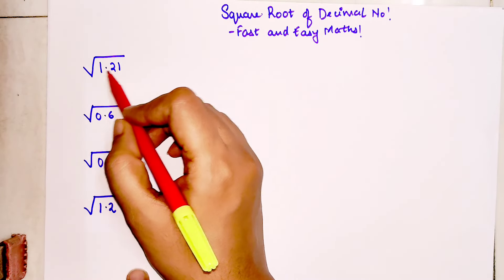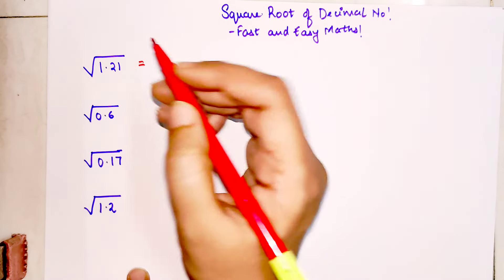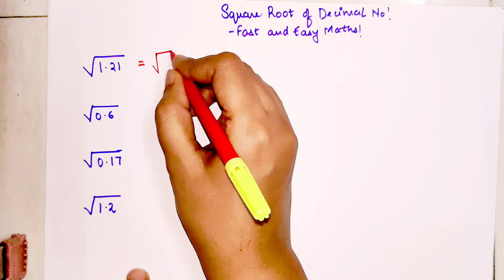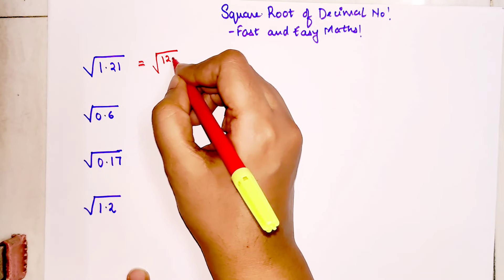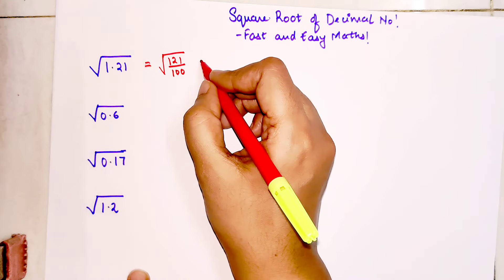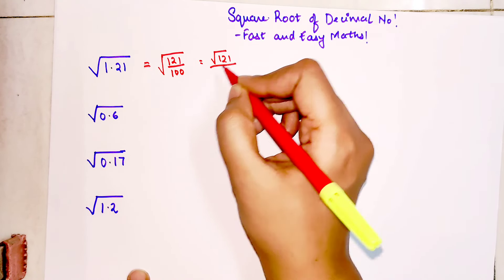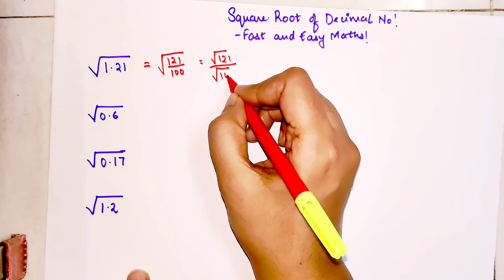So here what you do is, see now please understand we have a square root. The first job what you should be doing is write this in the form of a fraction. So we can write this as 121 upon 100. Now let's take individual square root, so we have √121 and √100.